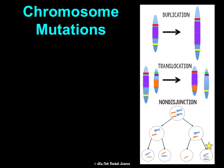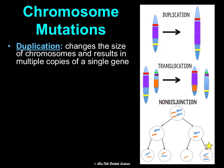Chromosome mutations are almost always worse than gene mutations because they're affecting multiple genes. The first type is duplication, which changes the size of chromosomes and results in multiple copies of a single gene. So a gene gets duplicated and now we have extra information.